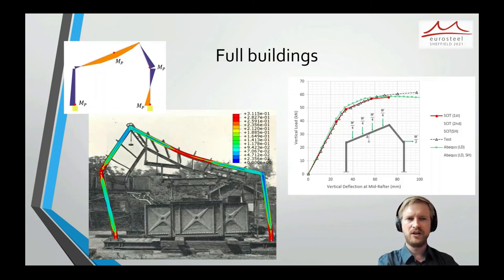So initially you can see this first order plastic analysis. This is the red line labelled SCIT. And this gives fairly good results, in particular compared to the Abaqus results, which is labelled, this green one labelled with large deflections.